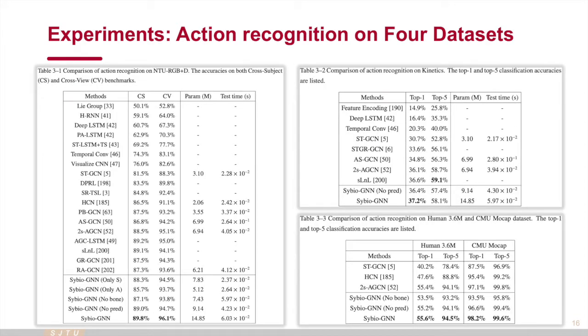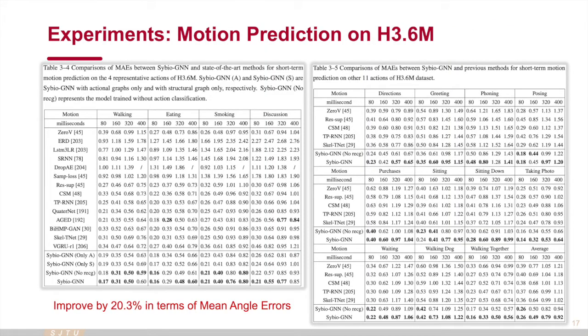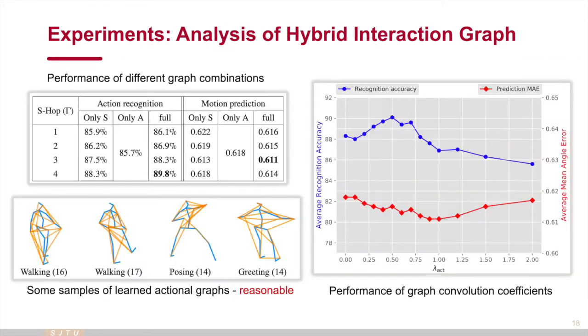We test our methods on four large-scale datasets. There are the action recognition accuracies. Our methods achieve superior results than state-of-the-art methods on various datasets and benchmarks. This is the human motion prediction results, where the proposed methods obtain the lowest error on most action categories. Here, we conduct ablation studies, aiming to find the optimal graph components and the coefficients of graph convolution terms. We visualize the learned action of graphs, showing the reasonable body interactions on different actions.